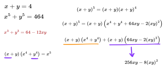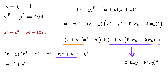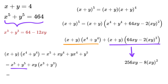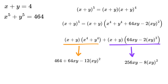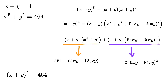For the other part, we expand (x⁴+y⁴) times (x+y): x times x⁴ gives x⁵, x times y⁴, y times x⁴, and y times y⁴ gives y⁵. So we get x⁵ plus y⁵ plus xy(x³+y³). Substituting x⁵+y⁵ as 464 and x³+y³ as 64 minus 12xy, this part becomes 464 plus 64xy minus 12(xy)².